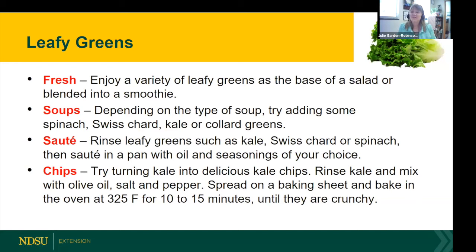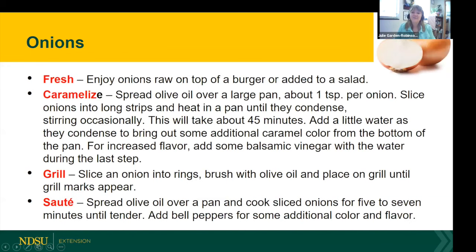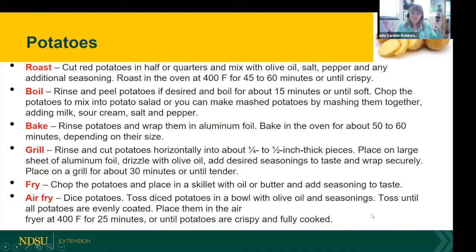Leafy greens — hitting the high points because I'm almost out of time. You can add spinach, Swiss chard, and kale to soups, sauté spinach, or make kale chips. Everything I'm saying is on the downloadable handout. Onions — the main thing I want to highlight is caramelizing. They are delicious when caramelized. You can make your own homemade onion soup, but be patient — caramelizing onions is a slow heating process. Some people actually use their slow cookers to do it for them. Of course you can also grill and sauté onions.